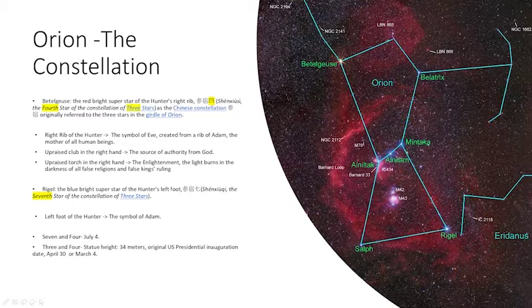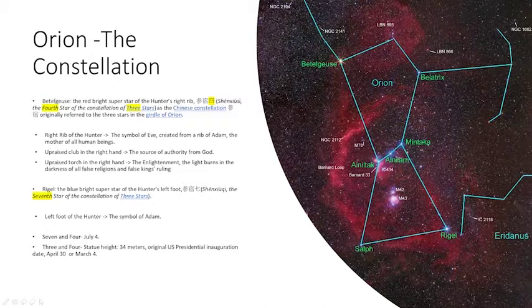It points to the first footprint of God. We observe seven and four from Rigel and Betelgeuse, which agrees with July 4th. We also observe the number three and four. The statue's height is 34 meters.